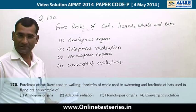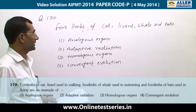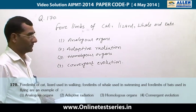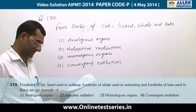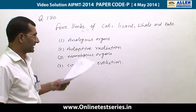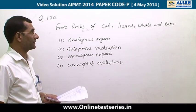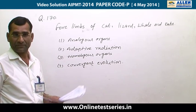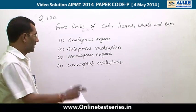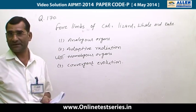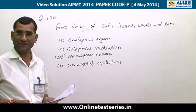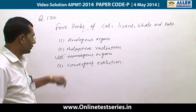Question number 170: In this question, four limbs of cat, lizard, whale, and bat are given. These limbs help in different functions — swimming, and bat wings help in flight — but these organs are all examples of homologous organs because their internal structure has the same basic plan; the set of bones is the same. So the answer is homologous organs.